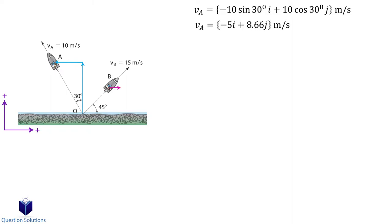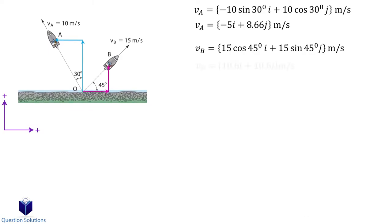Now we will do the same for boat B. We have 15 cosine 45 degrees and 15 sine 45 degrees. Let's simplify these.